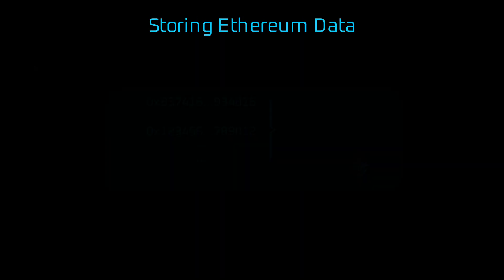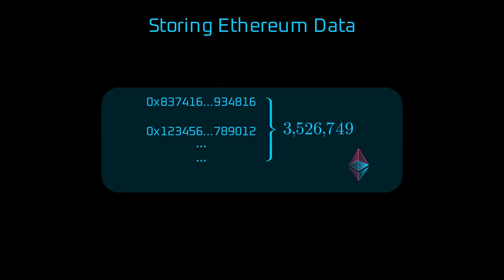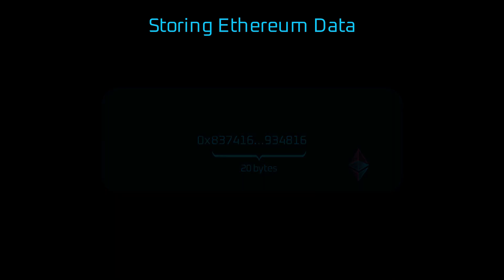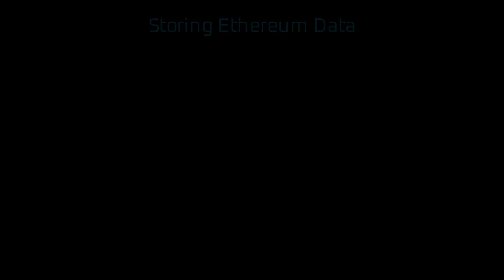For Ethereum, we have more than 300 million addresses to store in a state. Each of them is of the length of 40 hexadecimal characters — so-called nibbles — which equals 20 bytes. For efficient lookups within such addresses, Merkle trees are combined with another type of tree structure: Patricia tries.